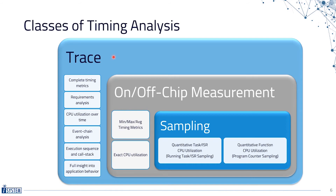From measurement, you basically get exact timing information of things like functions and OS tasks, by measuring the time between entry and exit. From this you can derive min, max, and average metrics and calculate CPU utilization. But you cannot analyze, for instance, function call sequences or event chains.